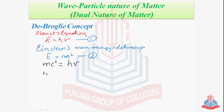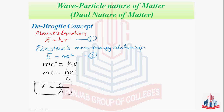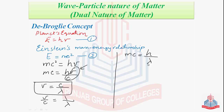This gives us mc = hν/c. From Planck's equation, frequency is inversely related to wavelength: ν = c/λ, so ν/c = 1/λ. Substituting, we get mc = h/λ. Now if this concept is applied to a moving electron with velocity v, then mv = h/λ, or rearranging: λ = h/mv.